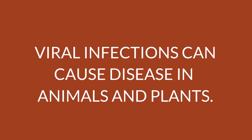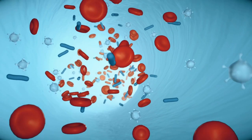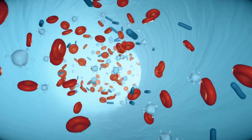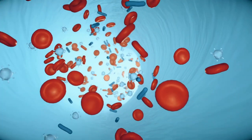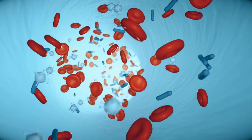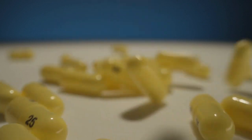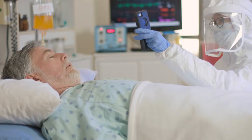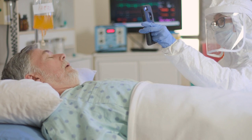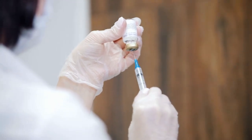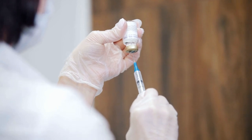Viral infections can cause disease in humans, animals, and plants. In healthy humans and animals, infections are usually eliminated by the immune system, which can provide lifetime immunity to the host for that virus. Antibiotics, which work against bacteria, have no impact. But antiviral drugs can treat life-threatening infections. Vaccines that produce lifelong immunity can prevent some infections.